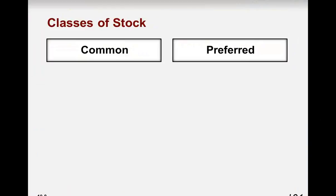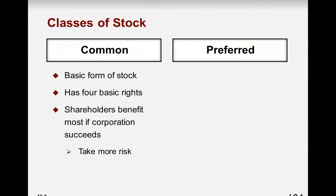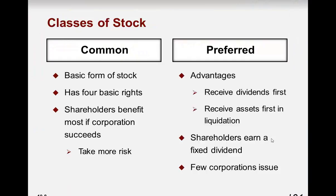There are different classes of stock. If a company only has one class of stock, it's common. Common stock is the basic form of stock with four basic rights — shareholders benefit the most if the corporation succeeds, but common stock usually takes on more risk. Preferred stock has some advantages: you receive your dividends first and receive assets first in case of liquidation, and shareholders earn a fixed dividend. However, very few corporations actually issue preferred stock.